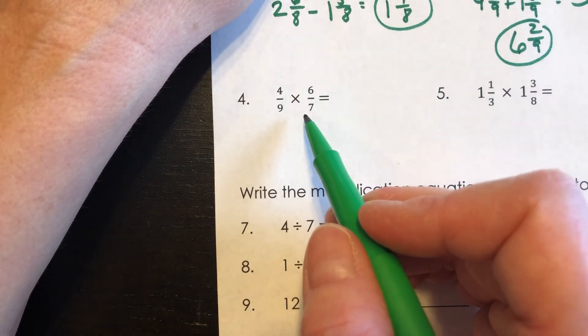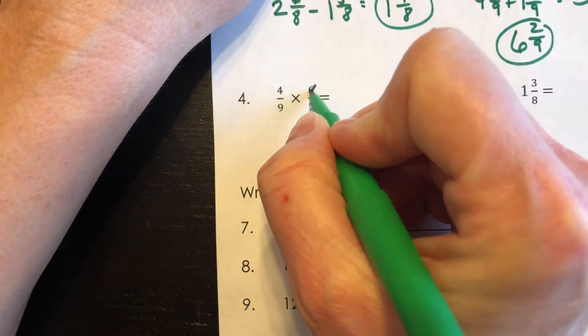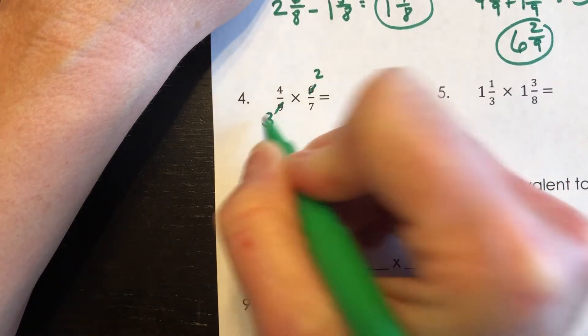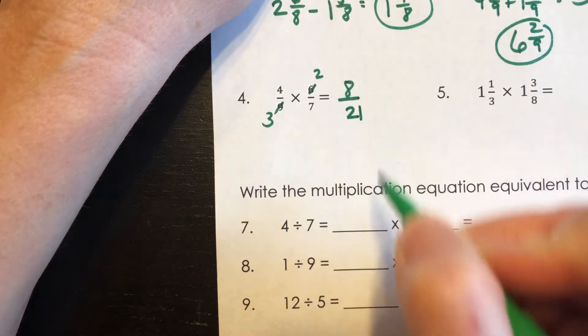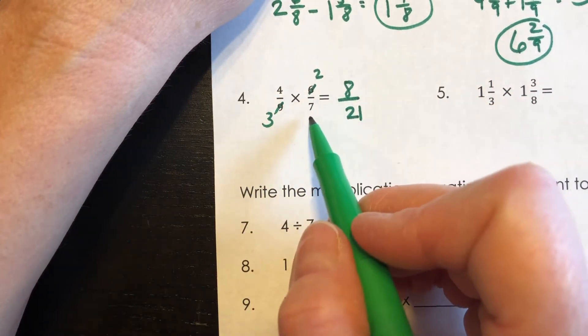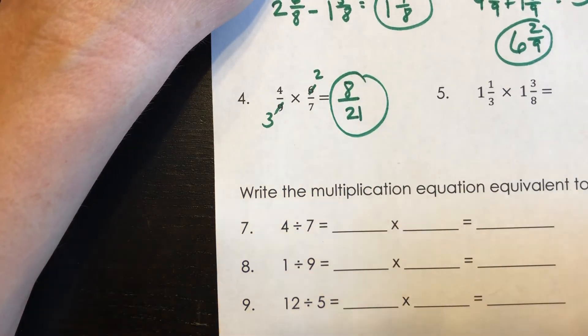And I want to see, can I cross-simplify it all? Four and seven, I cannot. But six and nine, I can. So three goes into six twice and into nine three times. Four times two is eight. And three times seven is twenty-one. Now if you have twenty-four over sixty-three, that's fine. But you can simplify that down to eight over twenty-one.